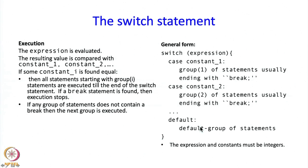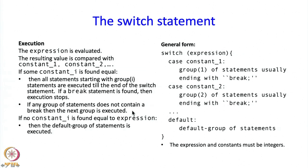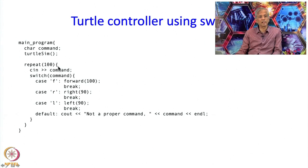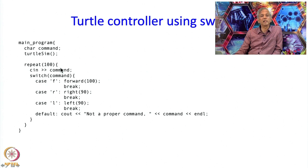That is what the switch statement looks like. If no constant i is found equal to the expression, then the default group of statements is executed. This statement looks like it is designed for our turtle controller. We were reading in a command and command is a character, but a character is actually an integer — a numeric type. A character only when you print it behaves like a character, but for calculation purposes it is actually an integer.